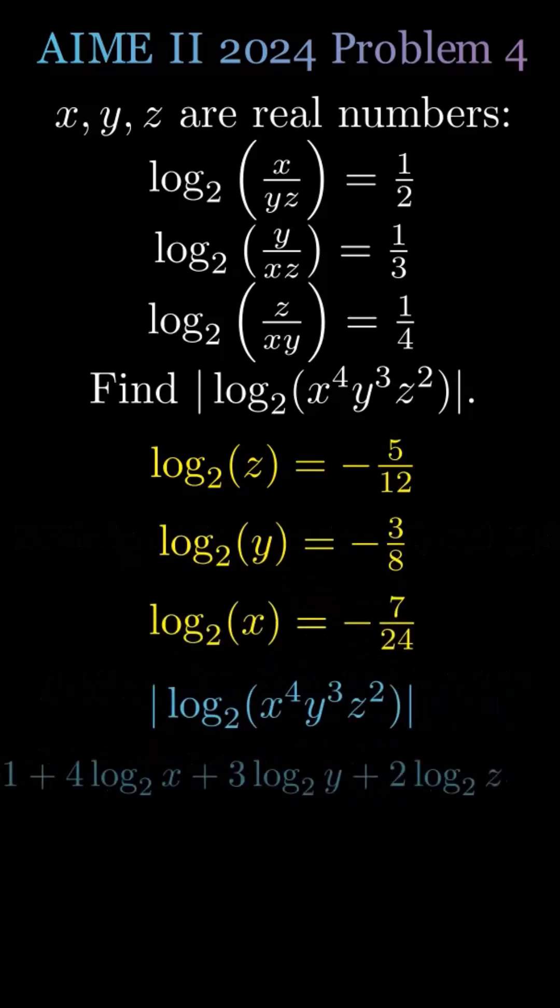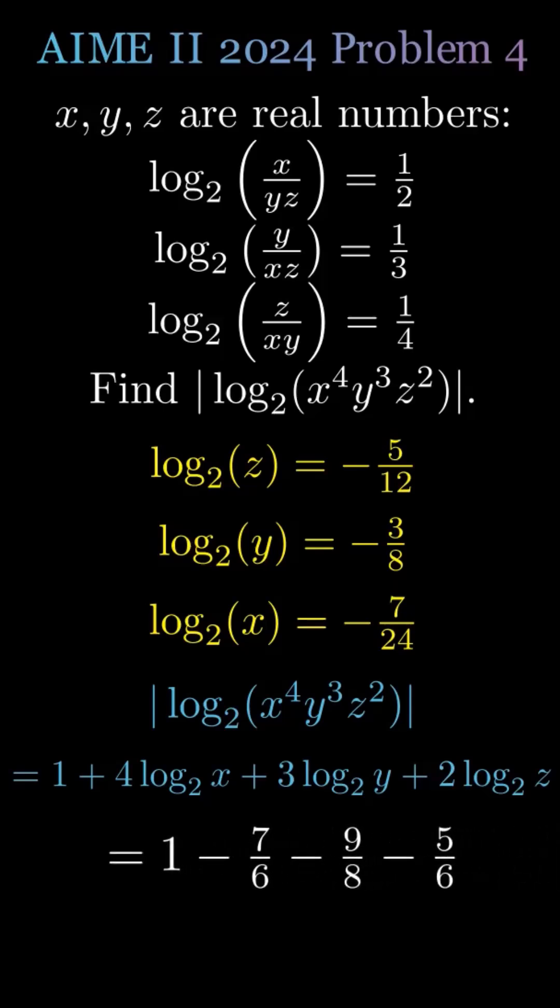Substituting these into 1 plus 4 log base 2 of x plus 3 log base 2 of y plus 2 log base 2 of z, we compute 1 minus 7 sixths minus 9 eighths minus 5 sixths, which simplifies to 25 eighths.